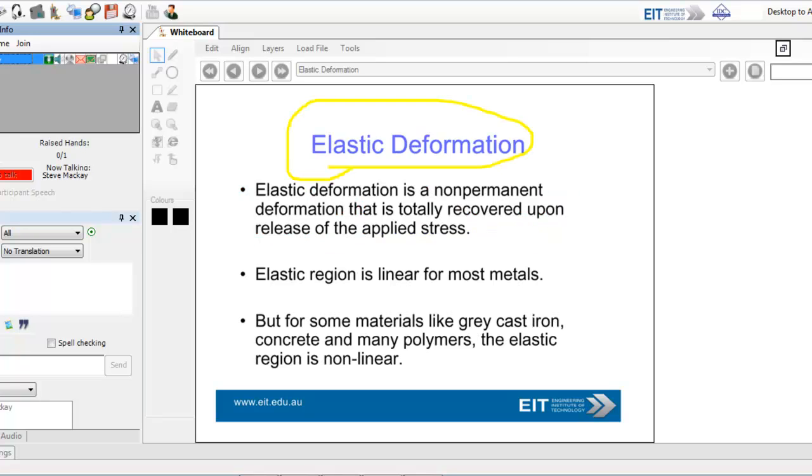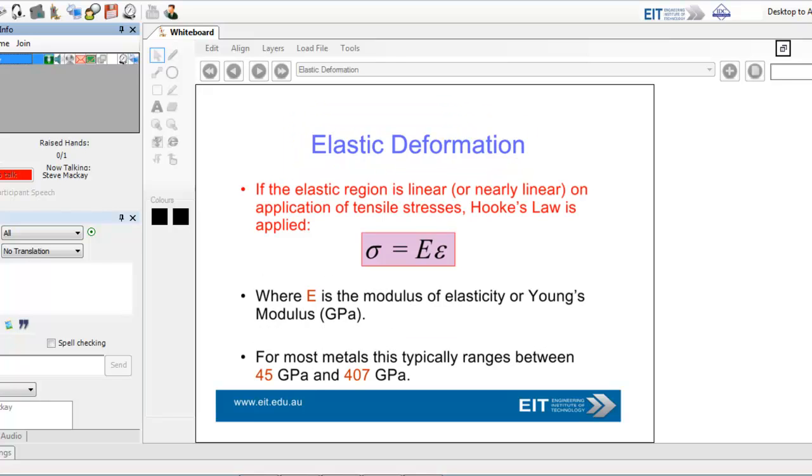Elastic deformation is quite interesting. It's a non-permanent deformation. You can think about a plastic pellet that goes back to its original shape. Elastic deformation is sigma equals the modulus of elasticity, here Young's modulus, and typically for metals is 45 gigapascals to 407 gigapascals.